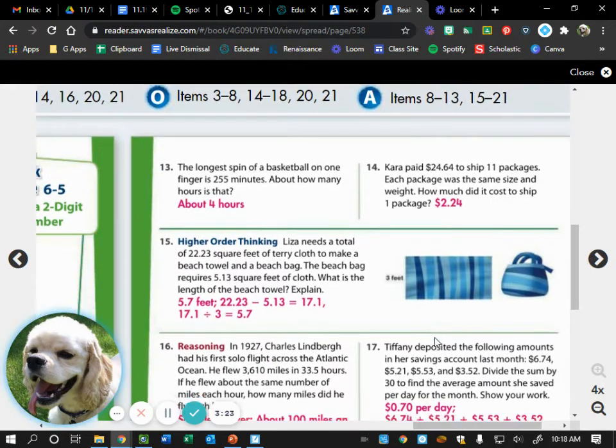So for number fourteen, Kara paid twenty-four dollars and sixty-four cents to ship eleven packages. Each package was the same size and weight. How much did it cost to ship one package? So we're told there's eleven packages. It costs twenty-four dollars and sixty-four cents to ship all eleven. To figure out how much it would cost to ship just one, then we would take that price and divide it by eleven.